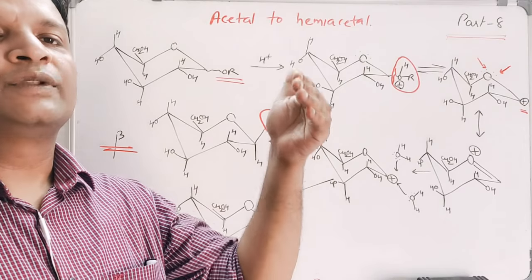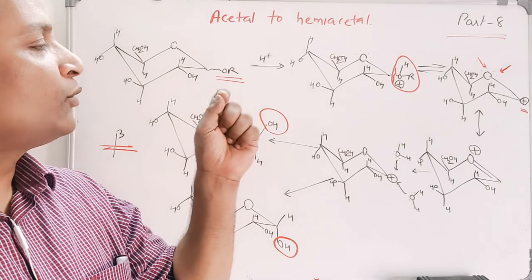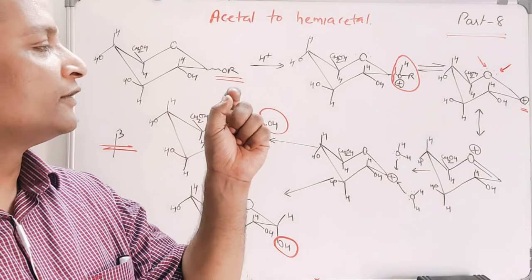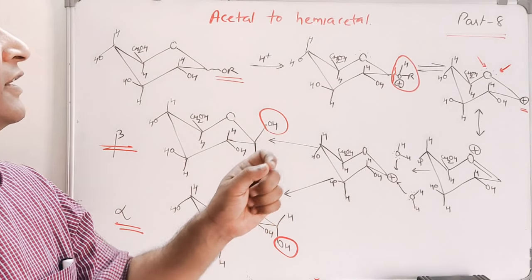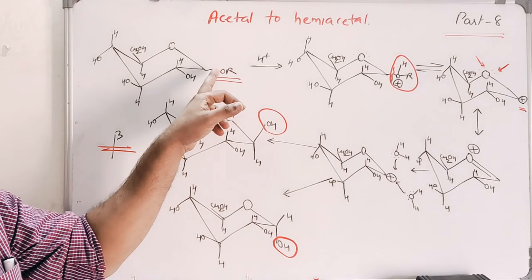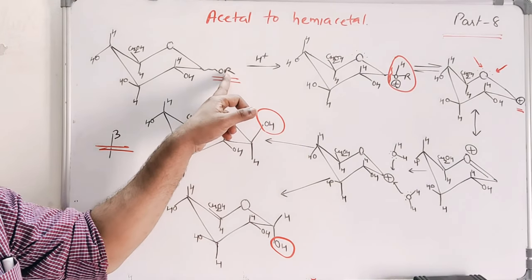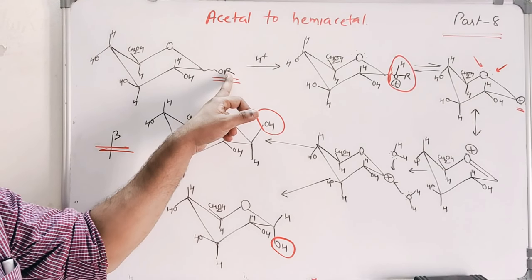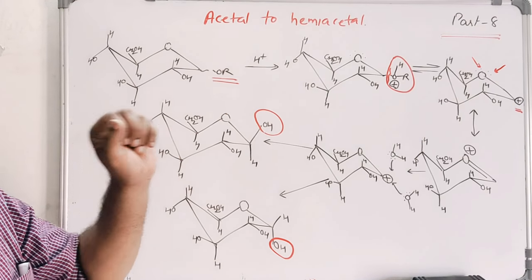This is the complete mechanism of acetal to hemiacetal and hemiacetal to acetal formation. One important point to note: only the anomeric group is affected, because only when the anomeric group is affected and removed does it give a carbocation, and that carbocation can show delocalization with the oxygen atom.